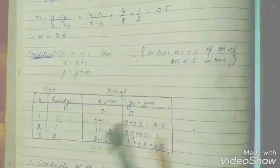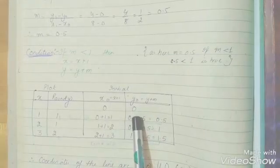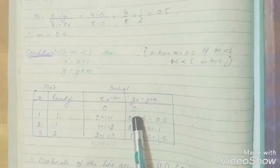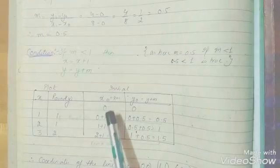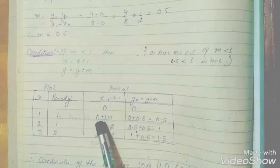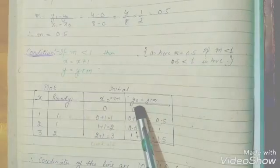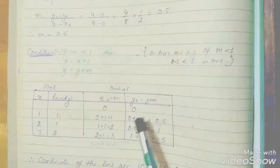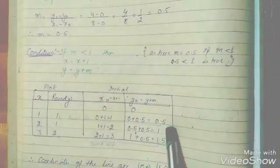So here we can see that the initial value of X and Y are 0 and 0. So to calculate the next value, we need to increment X by 1. So we add 0, 1 and we come up with answer 1, and Y0 is 0 and M is 0.5. So we add them, we get 0.5.